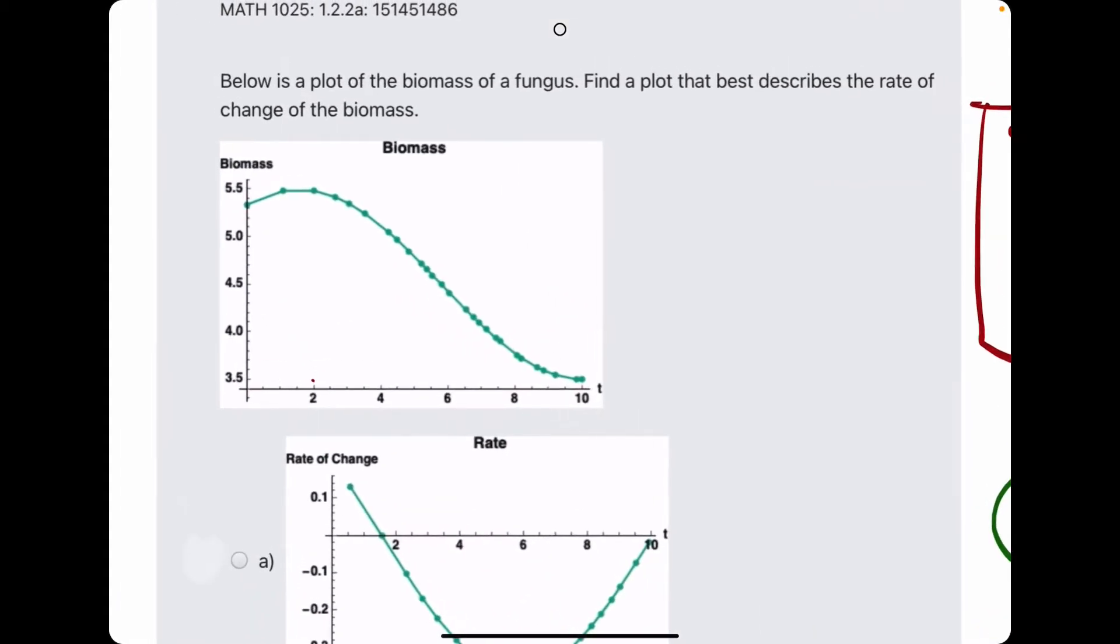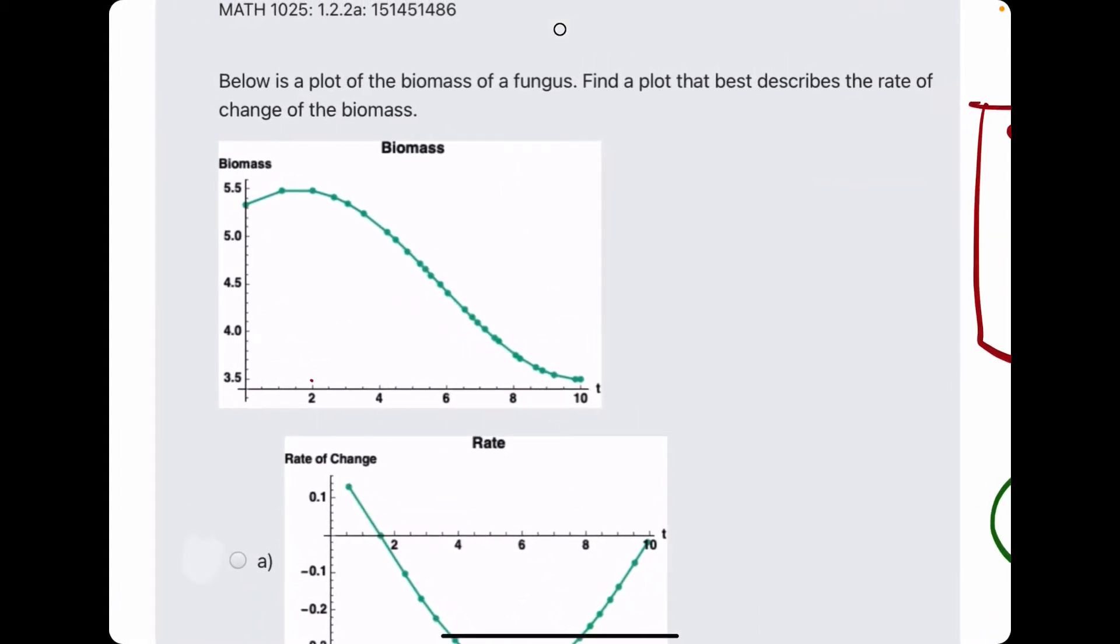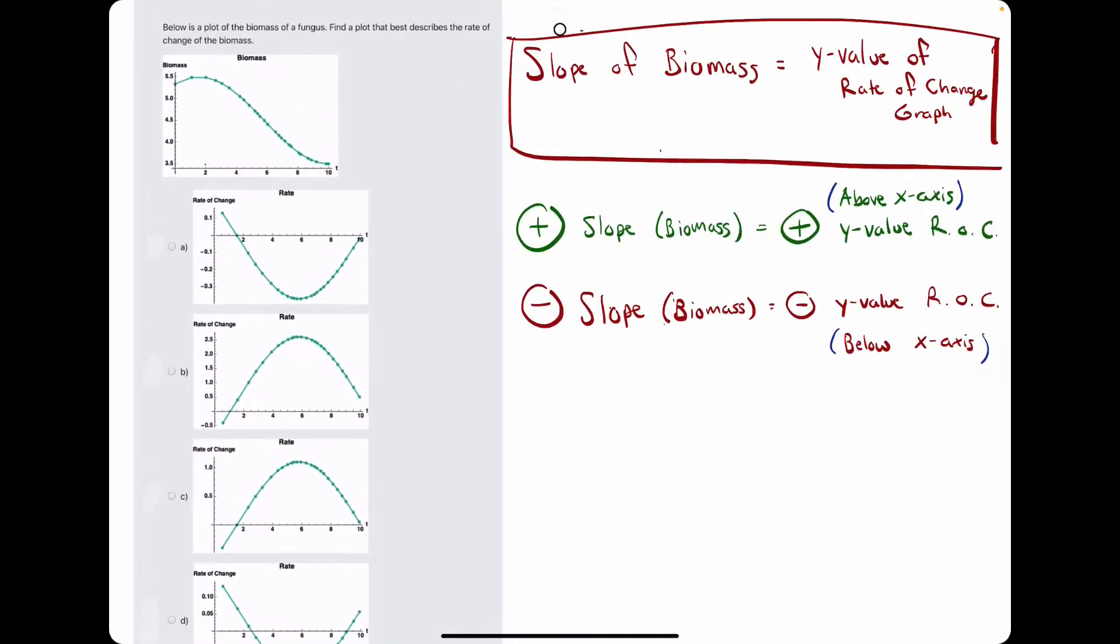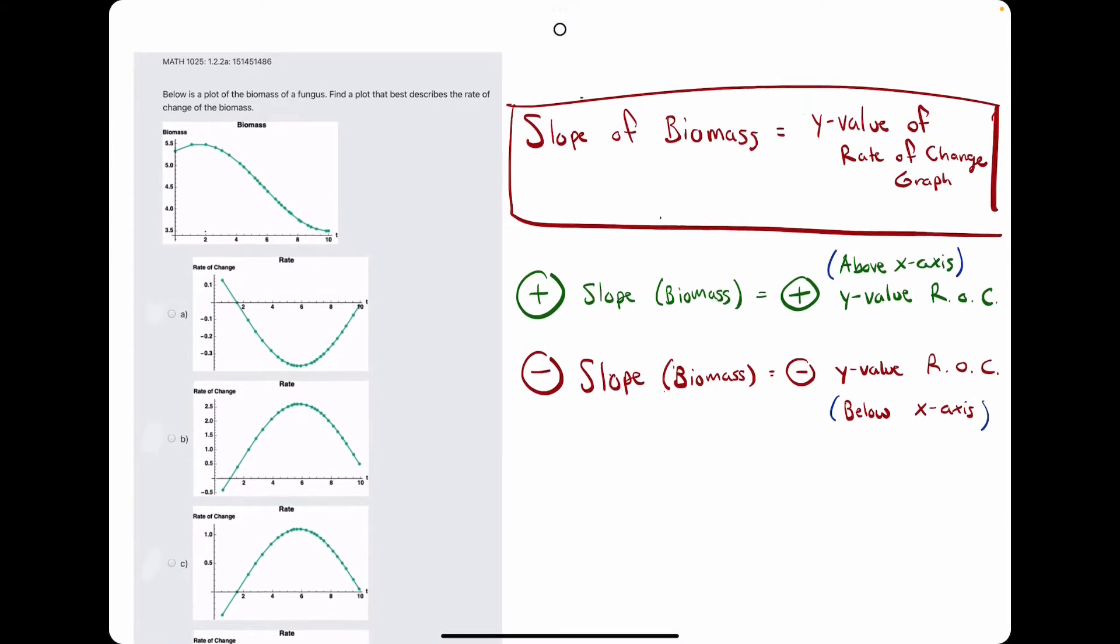Okie dokie. In this problem, we are given a graph of the biomass function, and the goal is to identify the rate of change graph of this original biomass function.